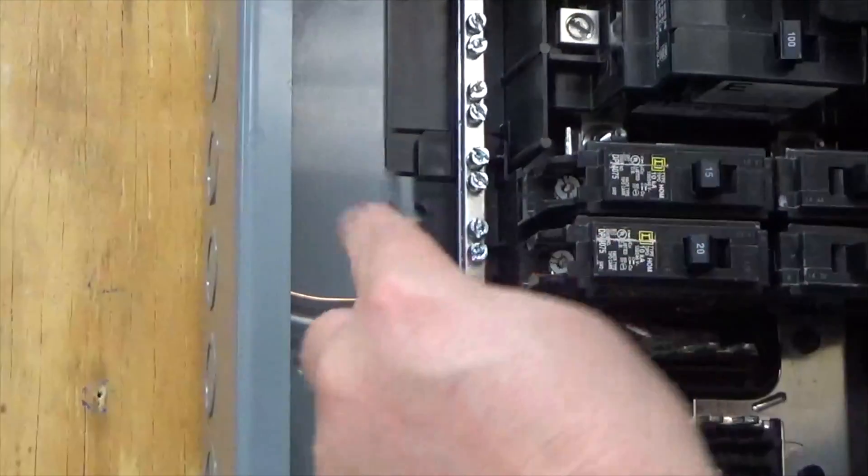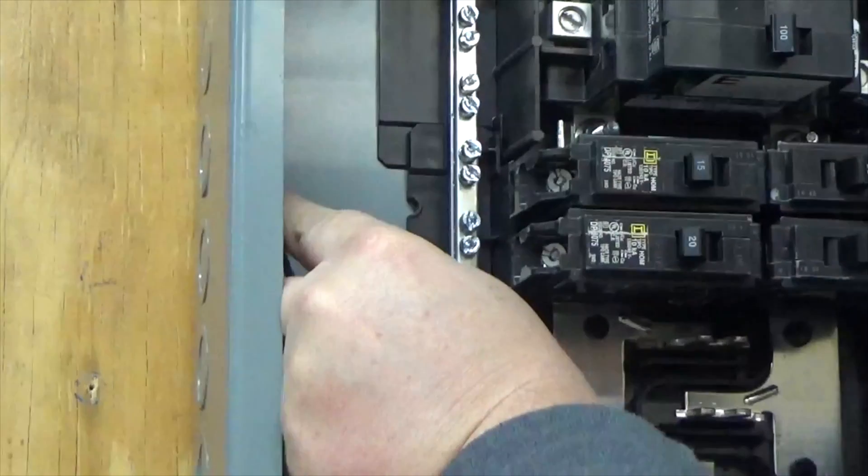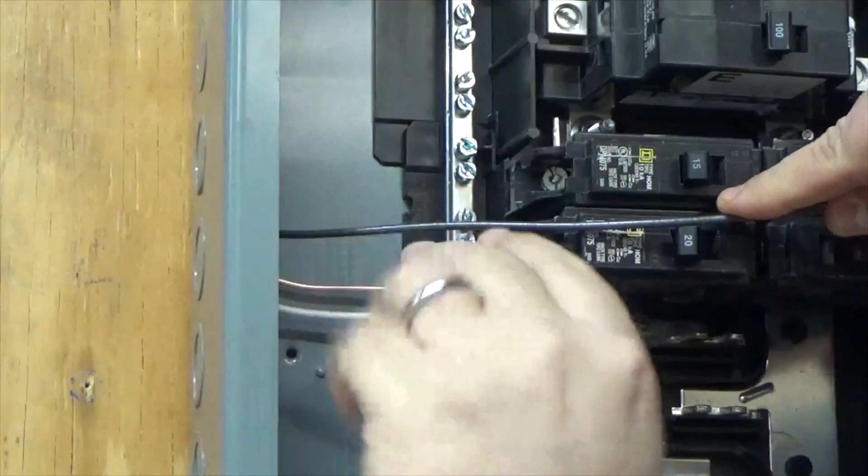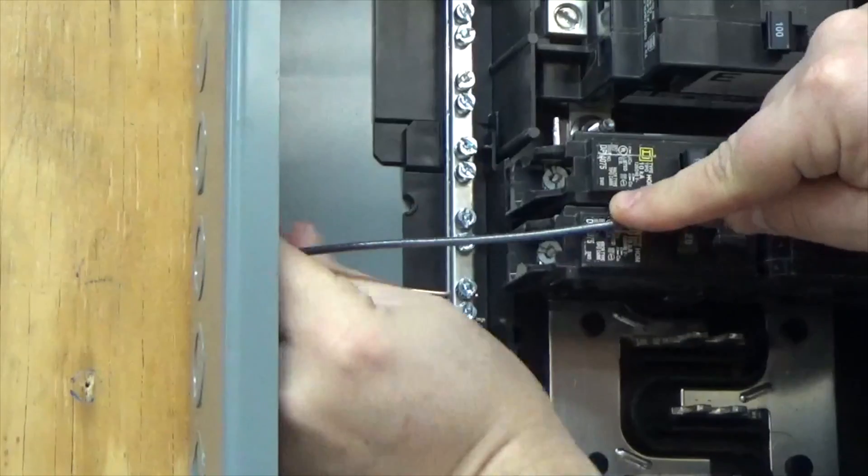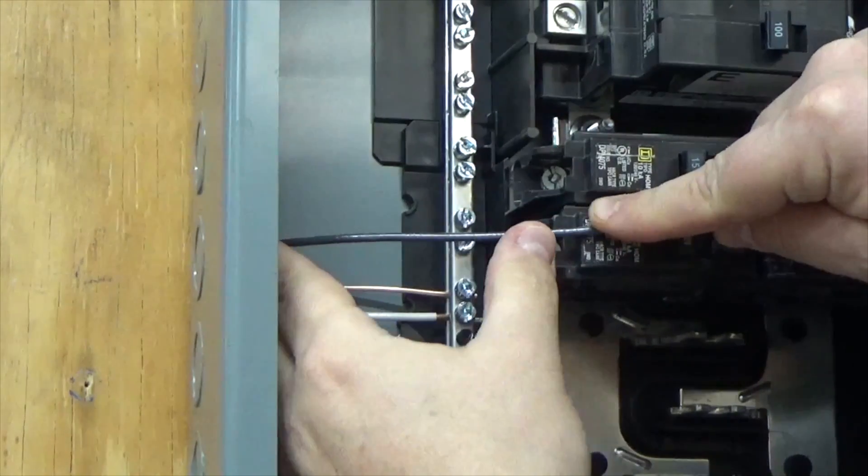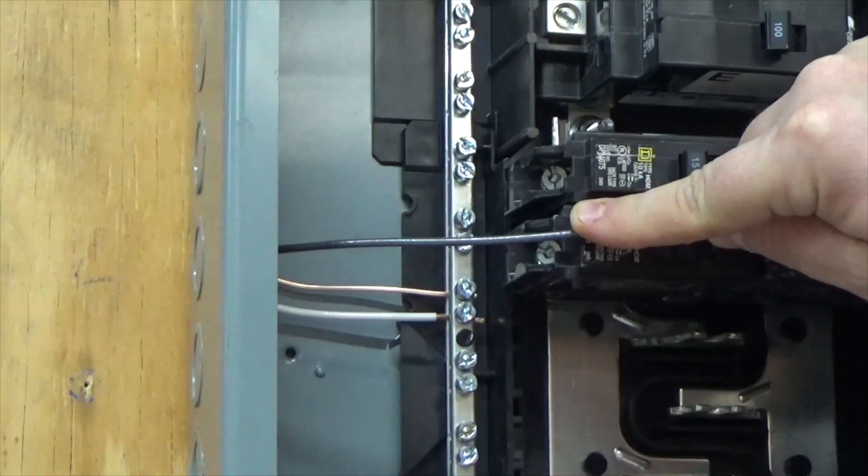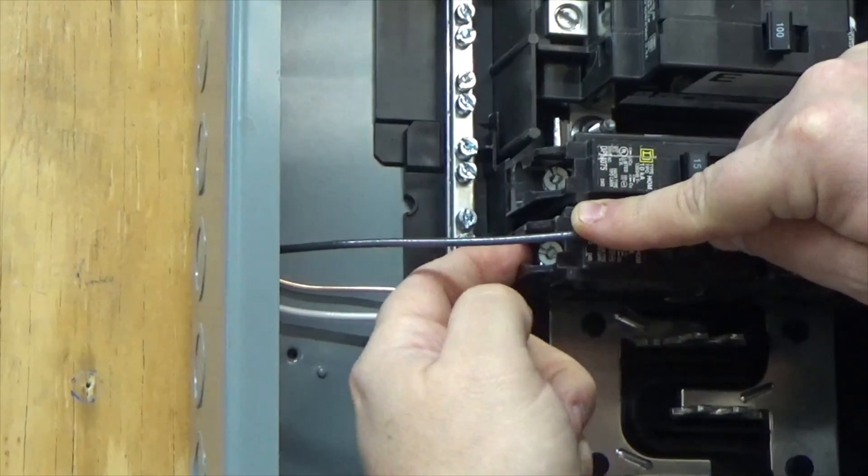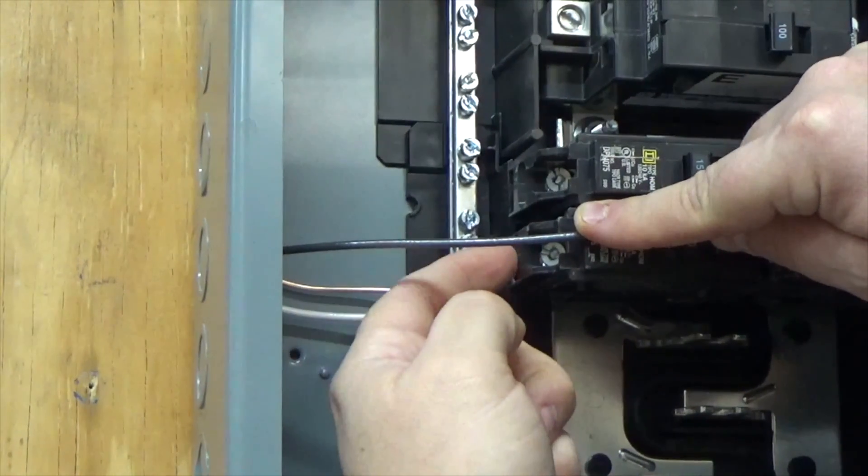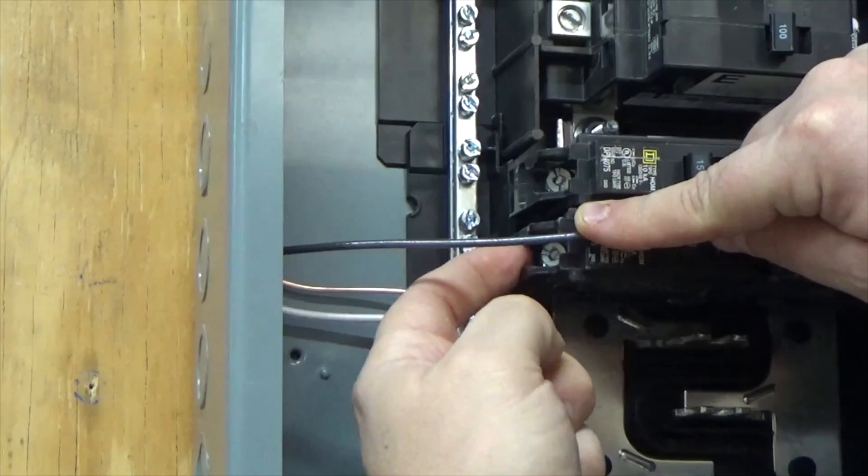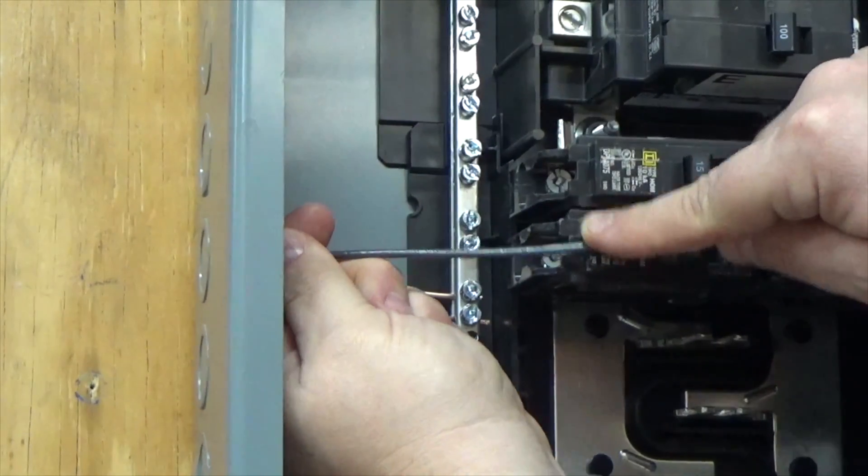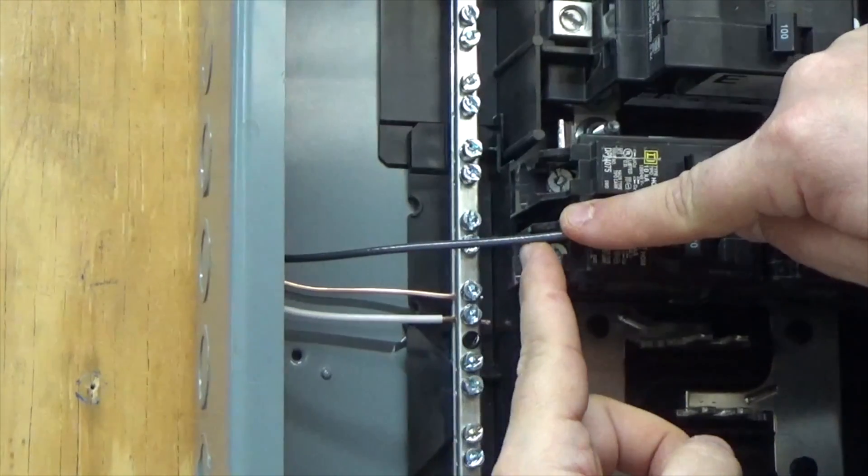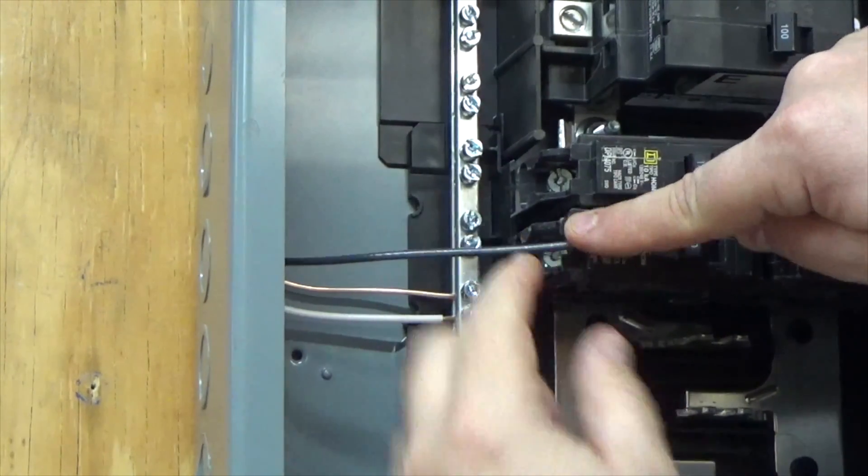Now I'm going to take my black conductor and I'm going to follow the same path. I'm going to come through and give it a little bit of a bend. Now my rule is when I give it a little bit of a bend, where I'm actually connecting it is about an inch and a half up from the back of the panel. So about an inch and a half I'm going to give myself a little bend. Then right about where the wire meets the breaker I'm going to cut it.